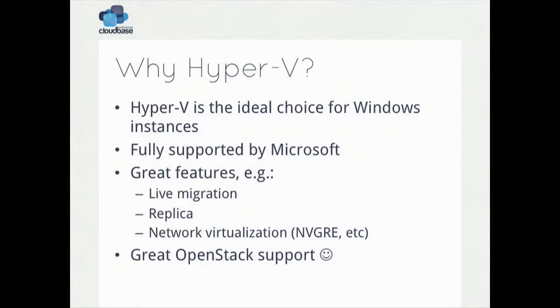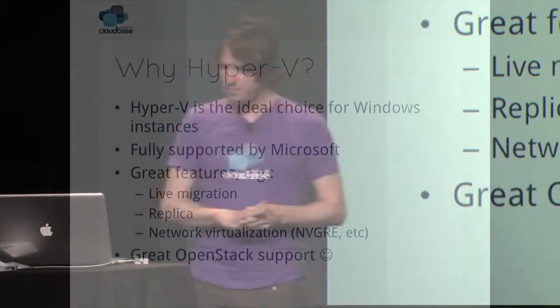So why Hyper-V? There are a lot of hypervisors already working well with OpenStack — think about KVM, Xen Server, and so on. Well, Hyper-V is the ideal choice for Windows instances. The best thing is to run Windows on top of Hyper-V, because it's made by Microsoft and fully supported by Microsoft. It has some great features: Hyper-V 2012 is a very mature product with live migration, replica, network utilization with MVA, and great OpenStack support, which is made by us.